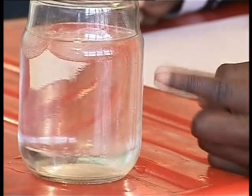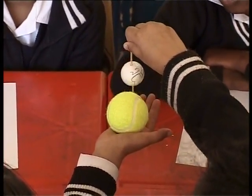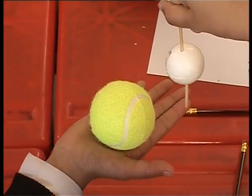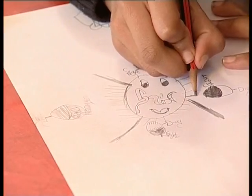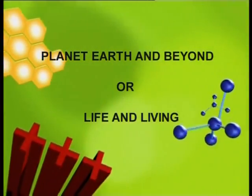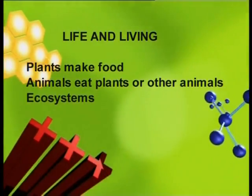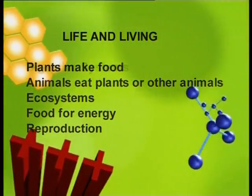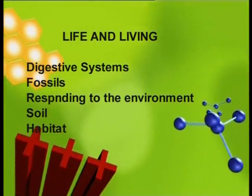These learners are talking about day and night, the seasons, plants — a lot of energy and change there. They could also talk about plant flowering seasons or nocturnal animals. Fossils can be in planet Earth and beyond or life and living. Lots of things rely on energy. Life and living: plants make food, animals eat plants or other animals, ecosystems, food for energy, reproduction, digestive systems, fossils, responding to the environment, soil, habitat and movement.